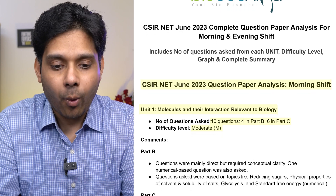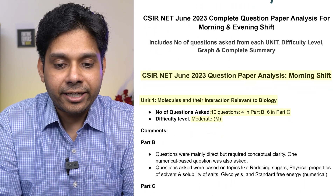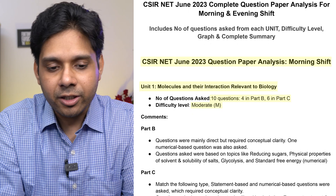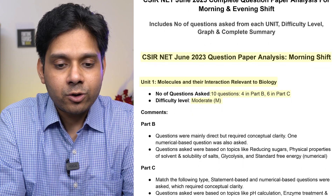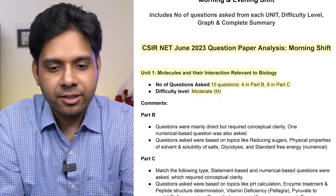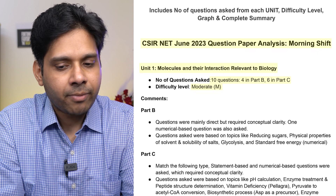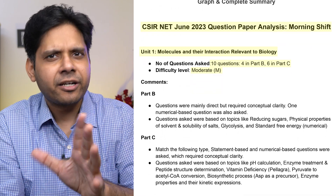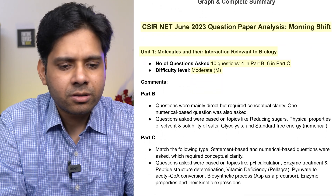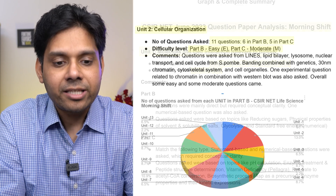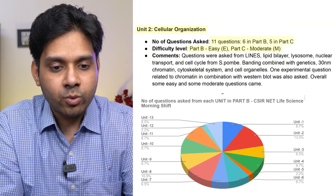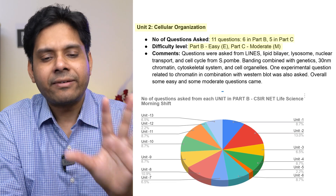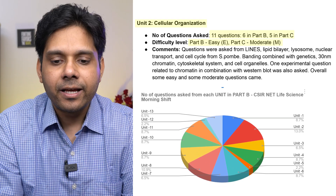In Unit 1 — Molecules and Interactions Relevant to Biology — we saw 10 questions: four in Part B and six in Part C. Difficulty level was moderate. Unit 2, Cellular Organization, had around 11 questions in total — six in Part B and five in Part C.